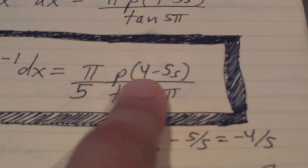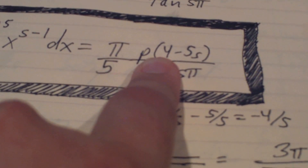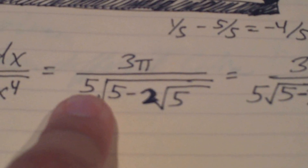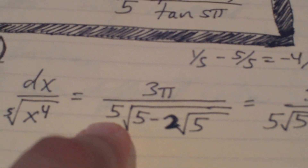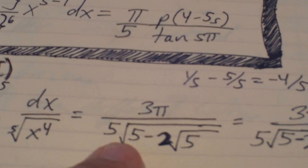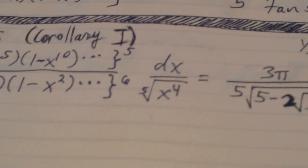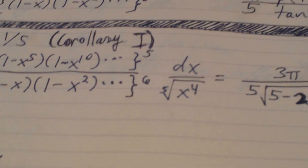We needed the value of the partition function, so we put in s equal to one-fifth, meaning five times one-fifth is one, so we need the partition of four minus one, which is the partition of three. The number of ways you can add up to three is three: {3}, {2+1}, {1+1+1}. So p(3) equals three, giving us three pi. Then we bring in that five from out front and use tangent of pi over five to get the square root of five minus two times the square root of five. There are lots of fives — five plays a crazy role in the Rogers–Ramanujan identities.